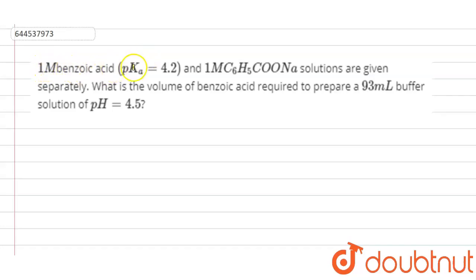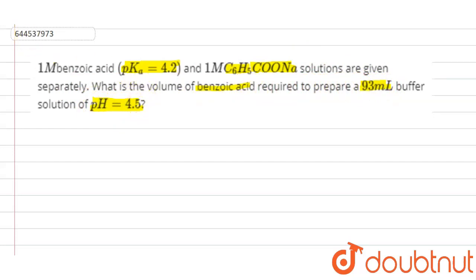Hello everyone. Here our question is: 1 molar benzoic acid (pKa = 4.2) and 1 molar C₆H₅COONa, which is the salt of benzoic acid, are given separately. What is the volume of benzoic acid required to prepare 93 mL of buffer solution at pH 4.5?